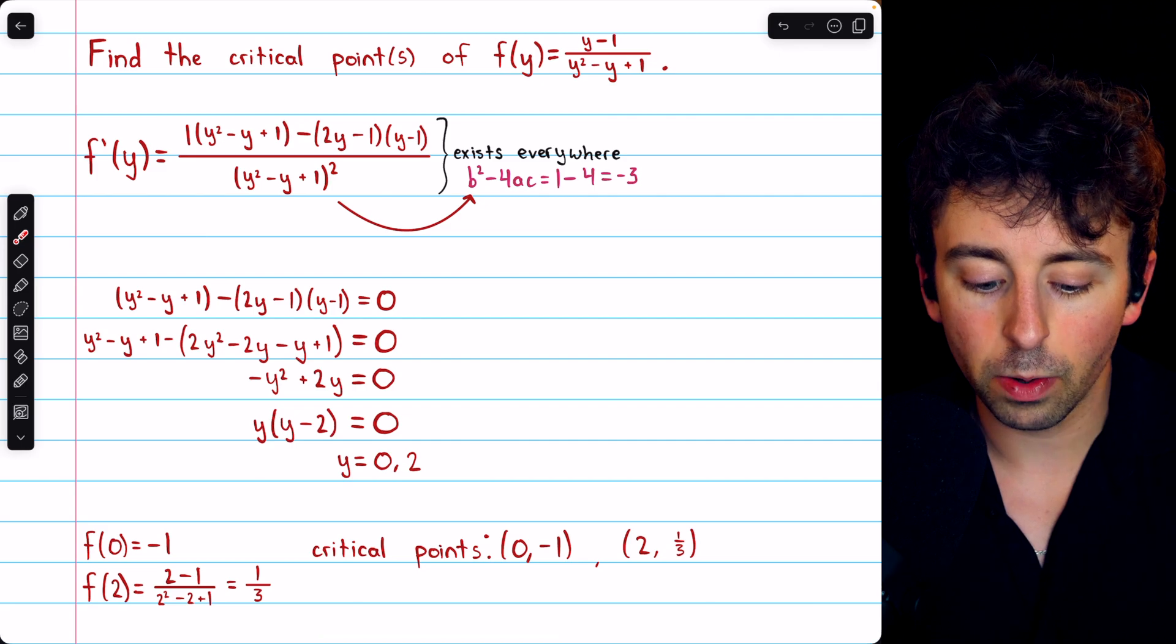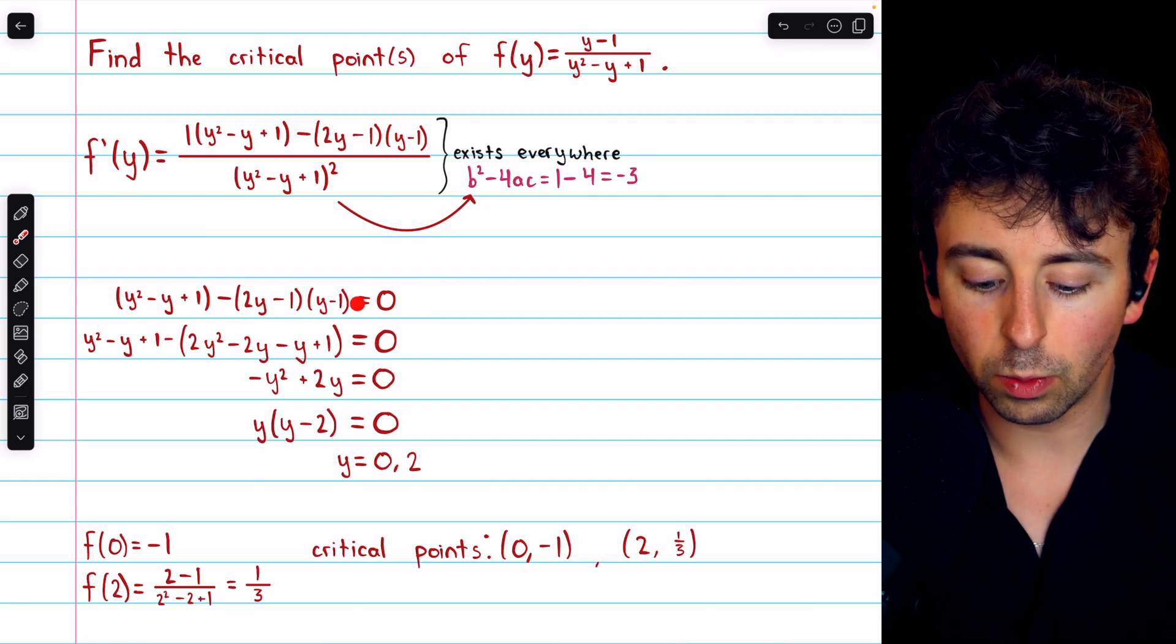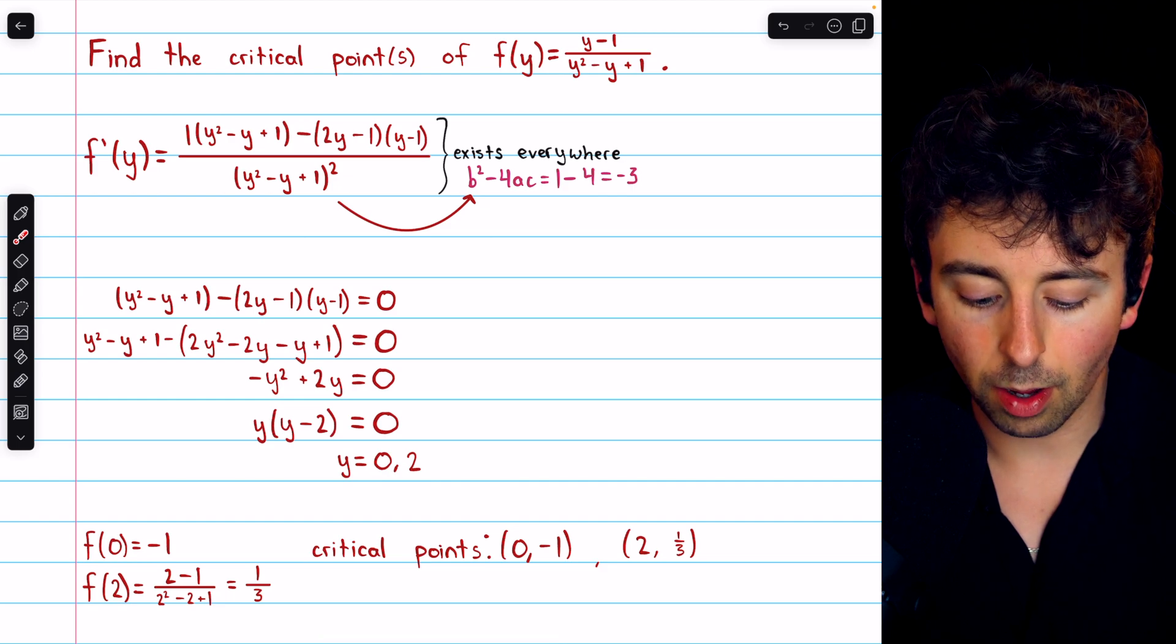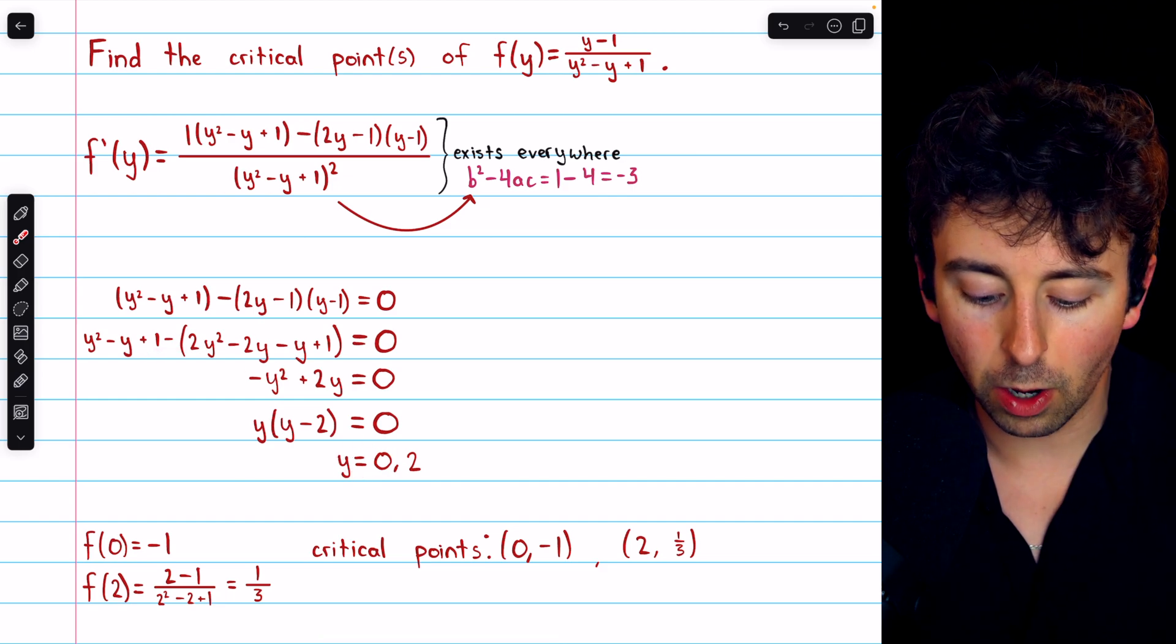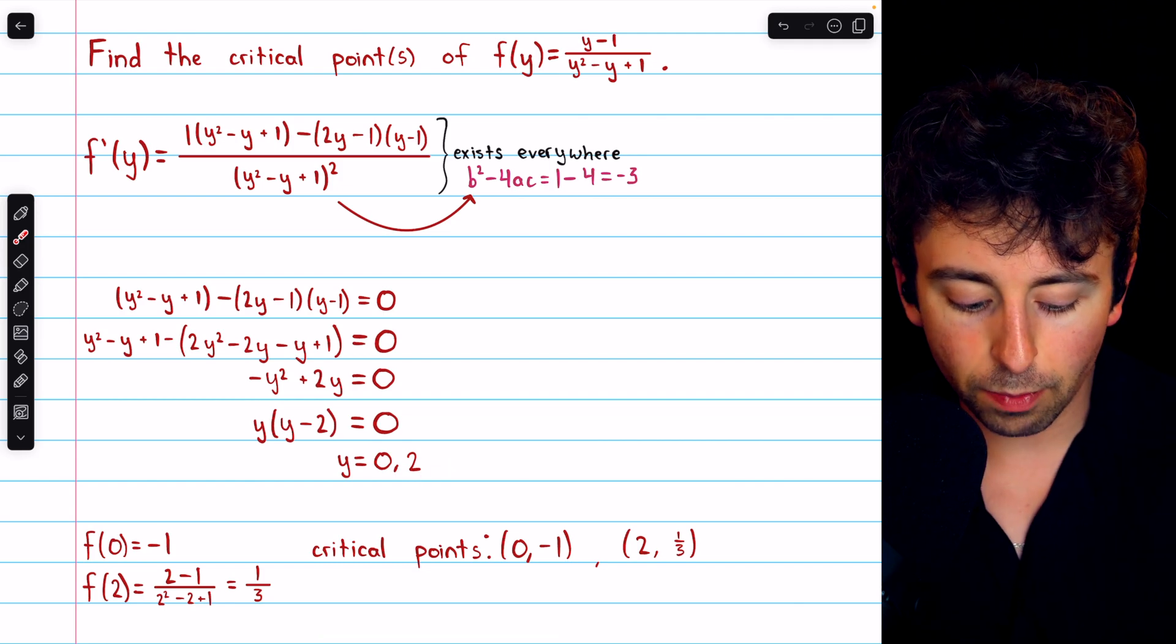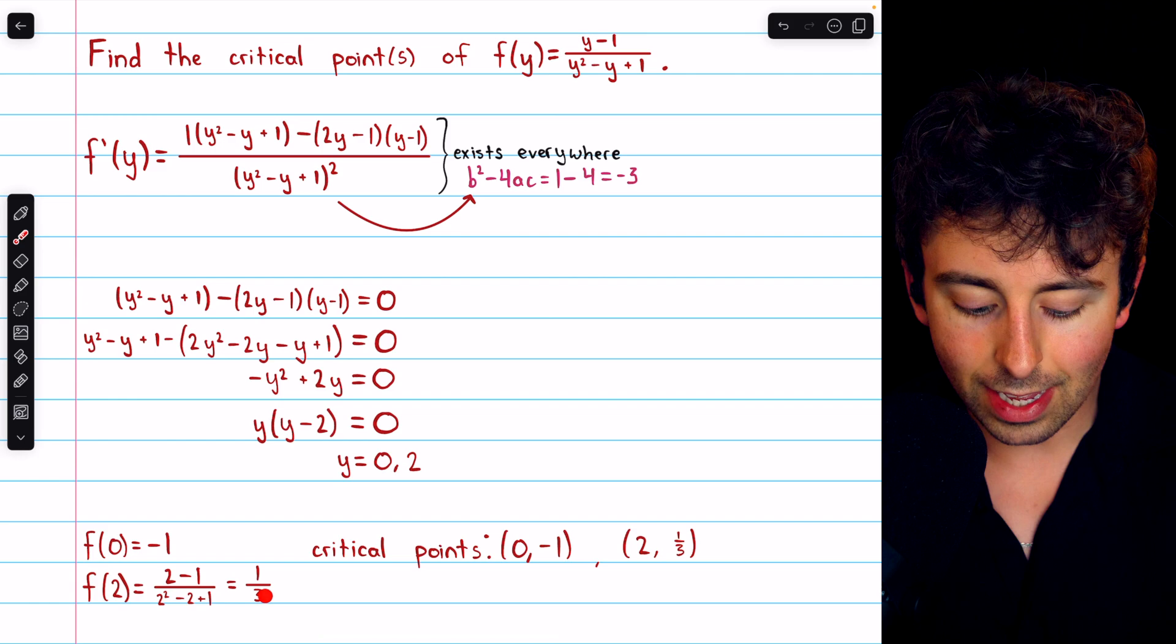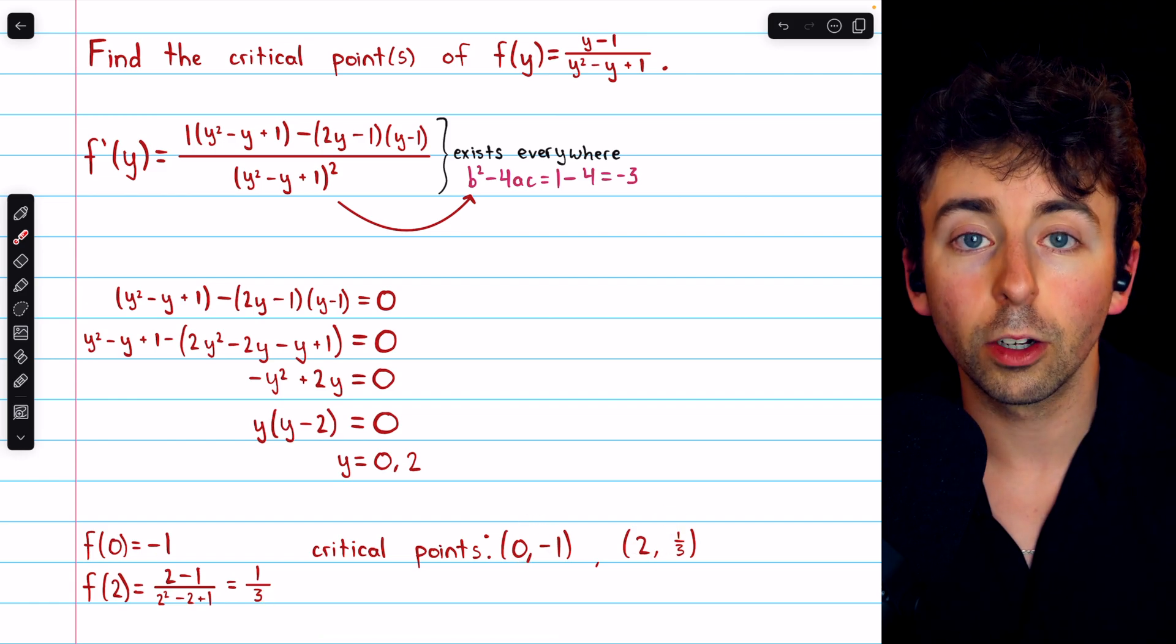For this to equal 0, the numerator has to equal 0. So we set the numerator equal to 0, and then we do some simplification and factoring, and find that y = 0 and y = 2 are the two critical numbers. Plugging those coordinates back into the function, we get the output values, and thus, these ordered pairs are the critical points.